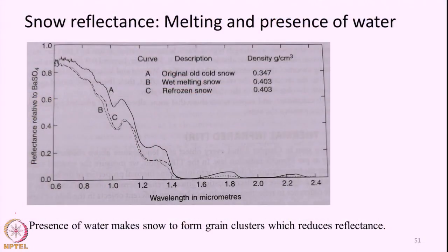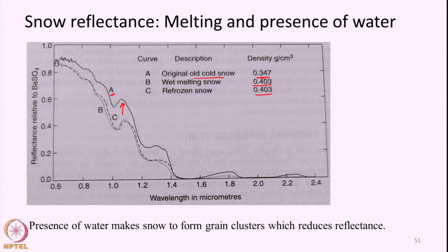Once snow melts and then refreezes, the reflectance may not be as high as the initial phase. The spectral reflectance curve A indicates the reflectance for original cold snow. When the snow melts, the reflectance curve falls to curve B. Then when the same snow refreezes, the reflectance will not increase as much as the original condition — because the density has increased, the reflectance will be lower than the original. So presence of water also tends to bring down the reflectance of snow particles.